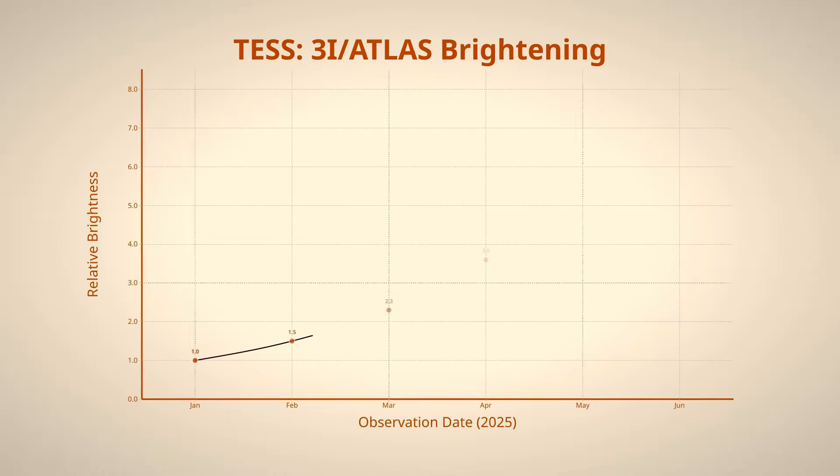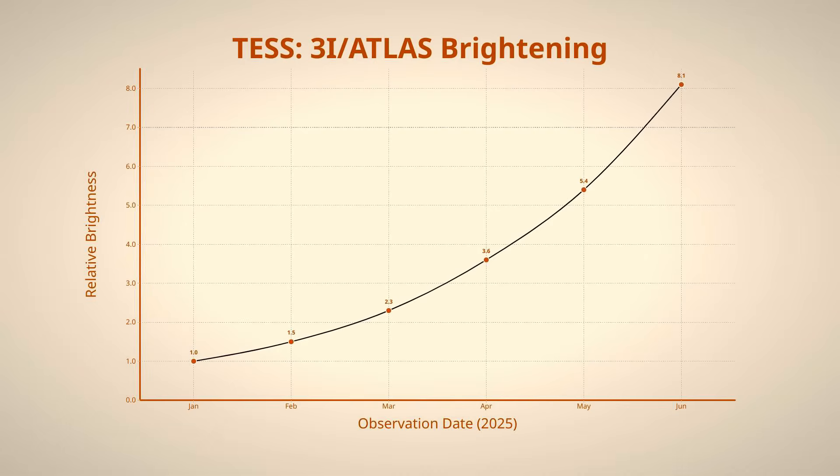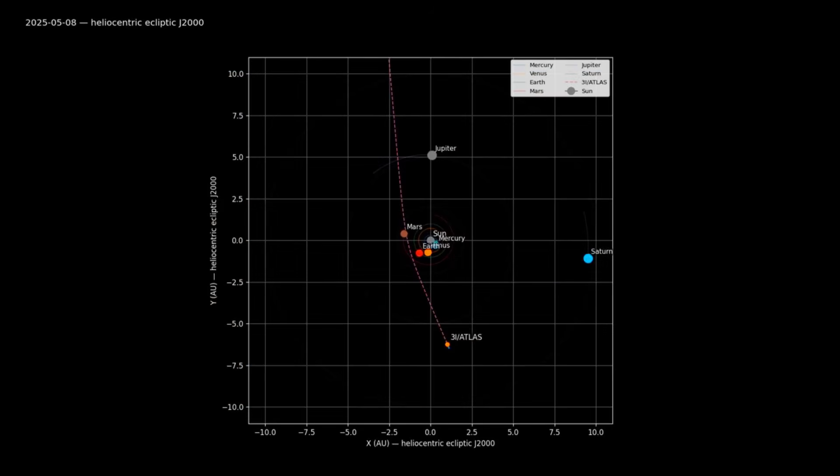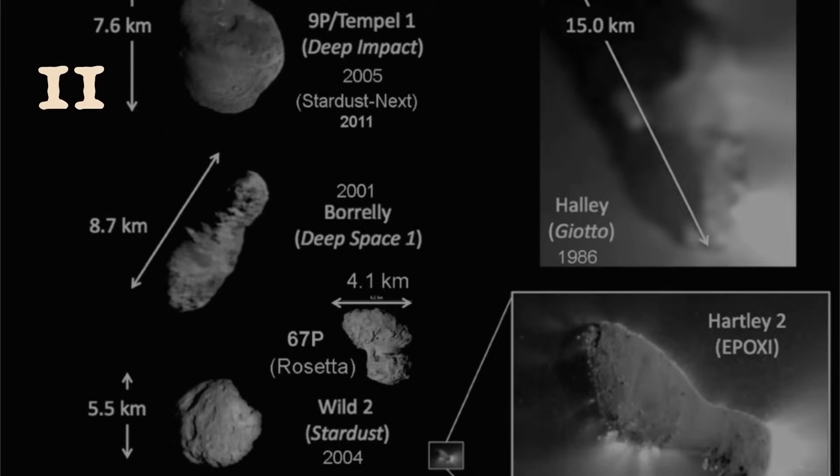On August 25th, 2025, spectrographs recorded a sudden spike in cyanide emissions from 3I Atlas, marking the start of its emerald transformation. This direct evidence, combined with TESS data showing a five-fold brightening at approximately 6.4 astronomical units and polarization signals not seen in any known comet, confirms that 3I Atlas breaks the rules of comet science. Its nucleus is at least 11 kilometers wide, making it the largest interstellar object yet detected.